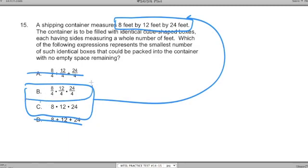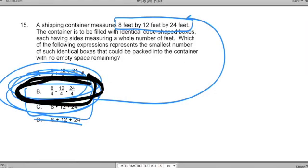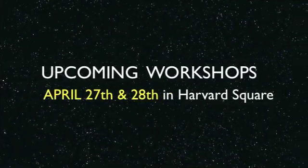Oh, what's the answer? The answer is B. B is the expression that gets you to the smallest number of boxes. These boxes here are actually going to be really big. They're all going to be four by four by four. Thanks a lot, team. Keep on watching these videos. Check out one of the, come to one of the Harvard Square MTEL Math workshops. You can register by going to gomath.com or you can sign up for one-to-one tutoring on the main website. I hope you found this helpful. Have a great day.